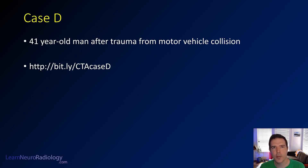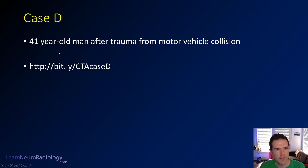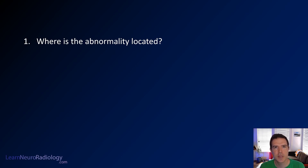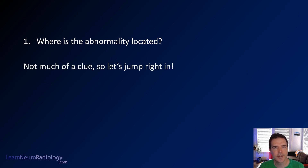Case D is a 41-year-old man who comes to the hospital after a trauma — an MVC, or car accident. You can go to the link to find the case and a couple of questions on the capstone course. The first question for us today is: where is the abnormality located? There's not a lot of a clue in that question, so we're just going to jump right into the imaging.